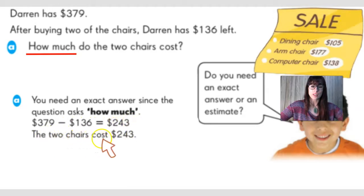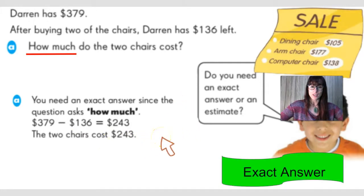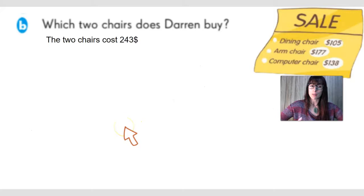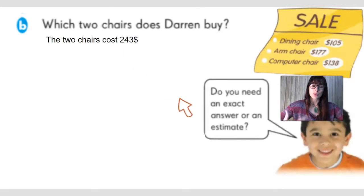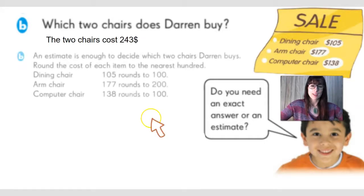So the two chairs that he purchased cost $243. This was a scenario where we needed to get an exact answer because we had the word 'how much' in the word problem. Now let's look at question number two, which asks: which two chairs does Darren buy? As you can see, we have a flyer that tells you the prices of each chair. We know that he spent $243 on chairs, and we just need to find out which ones he bought. Do we need to get an exact answer or just an estimate? An estimate is enough to decide which two chairs Darren buys.